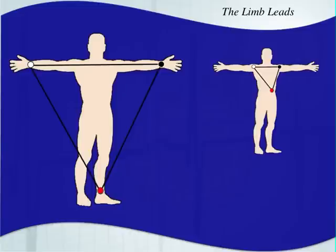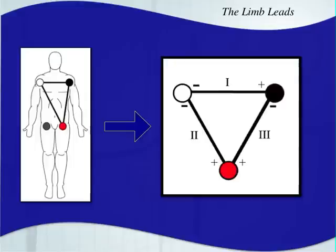Here's your standard placement. You have both different options — where you can put electrodes in the limbs or more towards the torso. Taking that placement, we actually get the leads, and you can see that the electrodes are connected in a triangle. It's called Einthoven's triangle, and that gives us each lead. Your right arm to left arm gives you lead one. Lead two is your left leg to right arm, and lead three is your left leg to left arm.